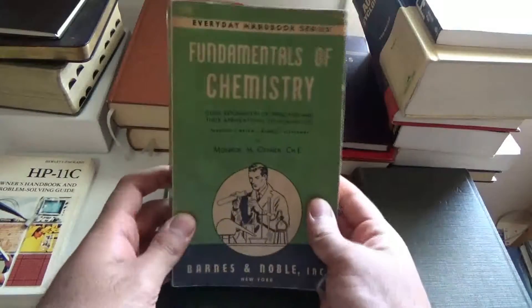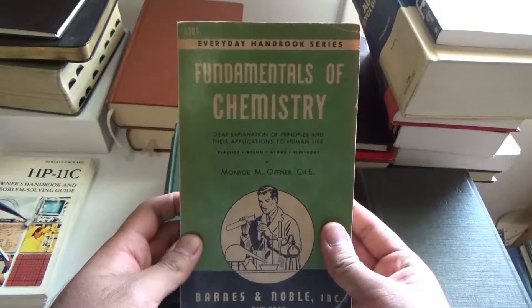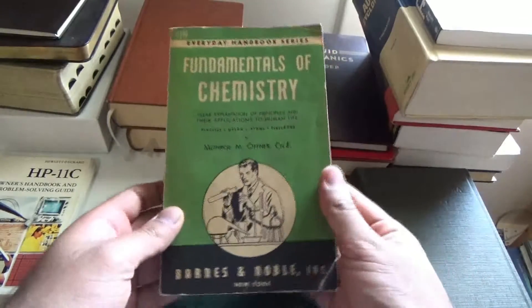So first let's look at the science books. This one is Fundamentals of Chemistry, sold by Barnes & Noble. But what's very interesting is this little card in here. You can see it's been in here so long that it's actually discolored the pages where it was. And this card says, Marshall Field & Company.